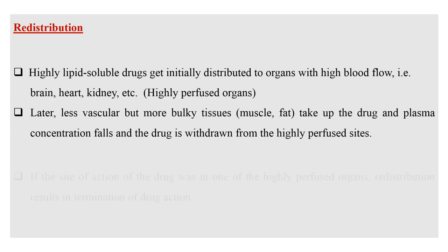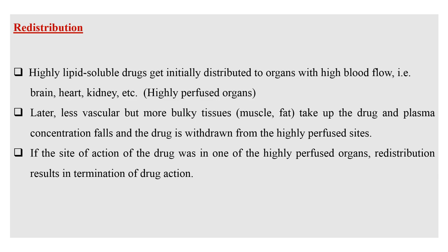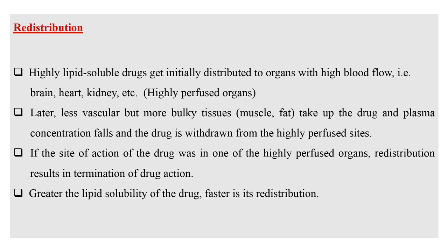There is one more concept: redistribution of a drug. Highly lipid soluble drugs get initially distributed to organs with high vasculature — high blood flow — such as the brain, kidney, and heart. These are known as highly perfused organs. Later, less vascular but more bulky tissues like muscles and fats take up the drug and plasma concentration falls, withdrawing the drug from the highly perfused sites. If the site of action was one of the highly perfused organs, redistribution results in termination of drug action. Greater the lipid solubility of a drug, faster is its redistribution.